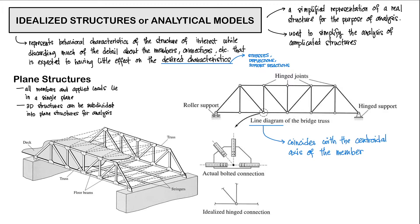So, what is an idealized structure or analytical model? And why do we use them and when do we use them? We use this when we're doing our structural analyses. Sometimes our structures could be a bit complicated that it becomes hard for us to do a structural analysis. And since we're engineers, we like to simplify things. So basically, your idealized structure or analytical model is just a simplified representation of a real structure for the purpose of analysis. These models represent the behavioral characteristics of our structure of interest while discarding much of the detail about the members, connections, etc., that is expected to have little effect on the desired characteristics — namely our stresses and deflections on the members, and the support reactions.